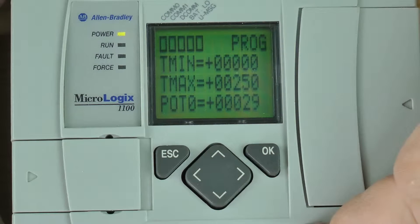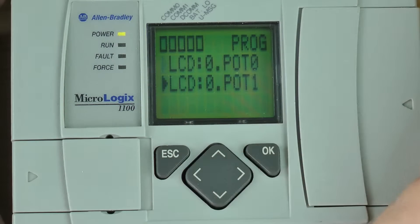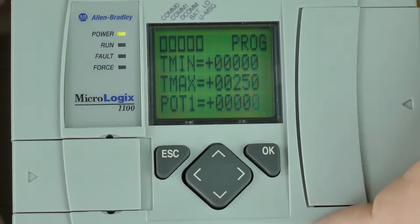Now at this point, I'm going to leave pot zero at 29 and I'm going to go ahead and press escape. Press the down arrow button once and then press the okay button to change pot one's value.